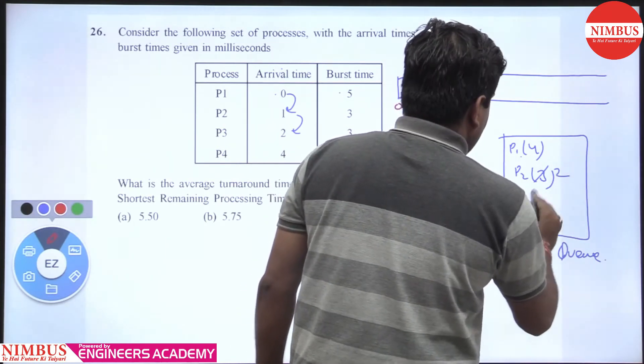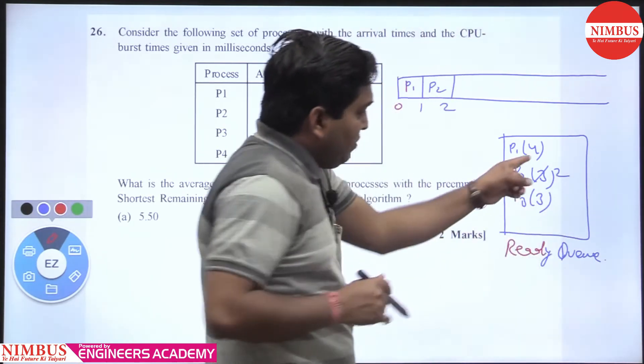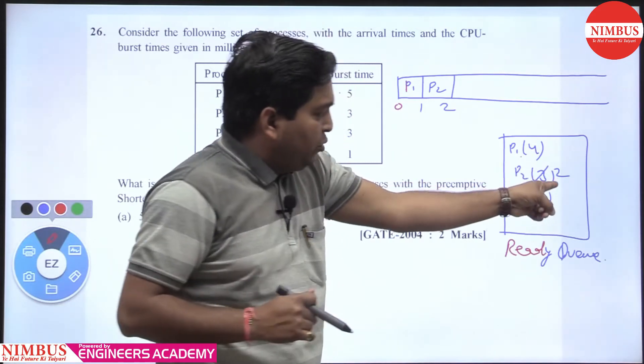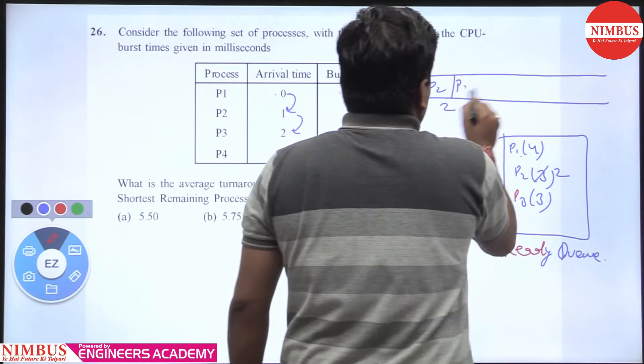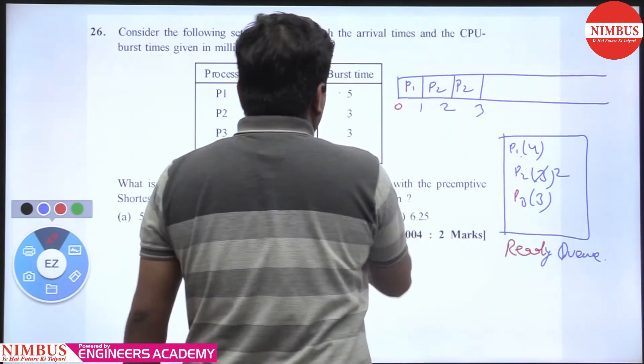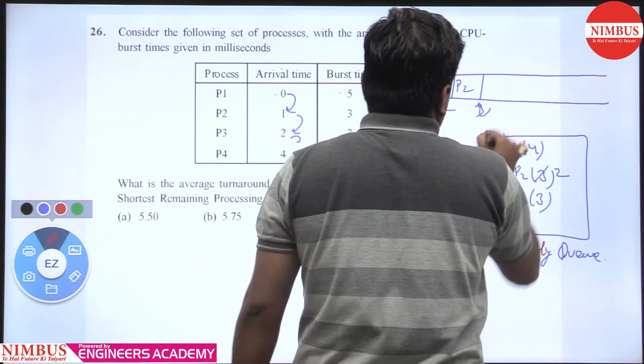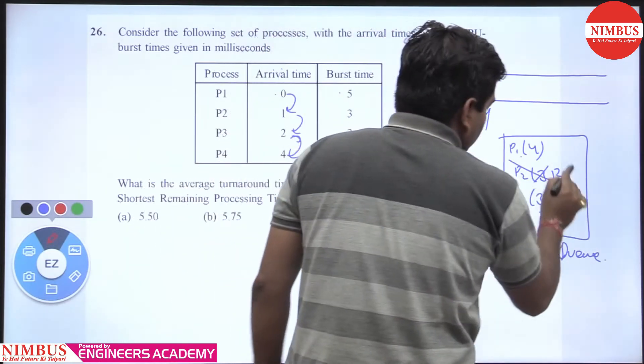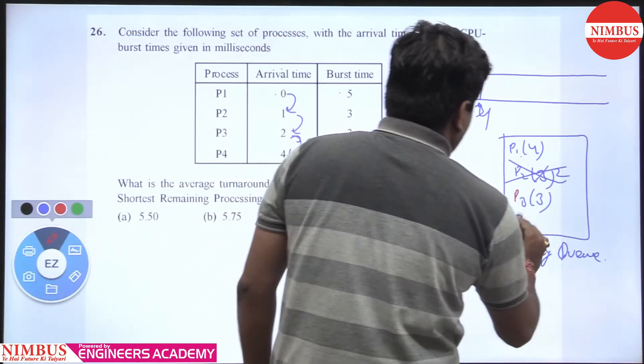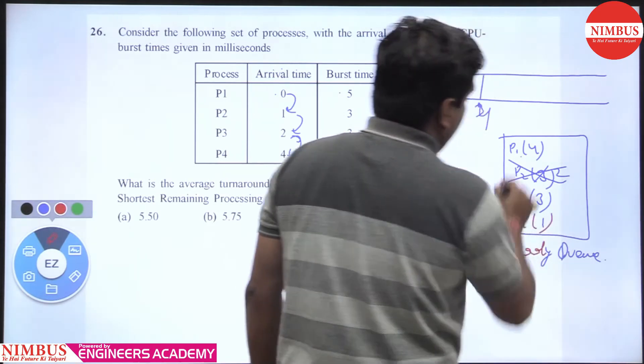From 2 to 3 and 2 to 4, P2 continues. Why? Because the next process comes at 4, so P2 will finish here. And P4 comes with execution time of 1. Which one is minimum? P4 is minimum. P4 runs from 4 to 5 and finishes. Then P3 from 5 to 8, then P1 from 8 to 12. Clear?